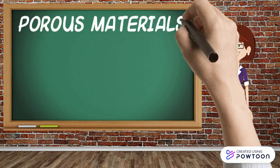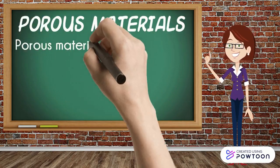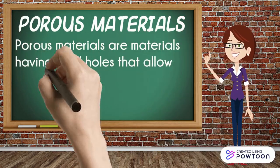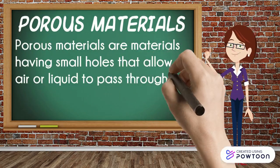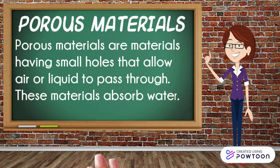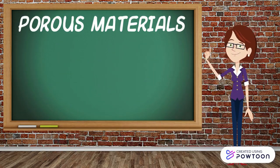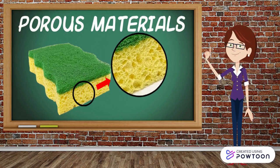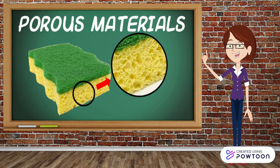Porous materials are materials having small holes that allow air or liquid to pass through. These materials absorb water. Take a look at this sponge — it has many tiny holes, which means that air and water can pass through it. It is a good example of a porous material.